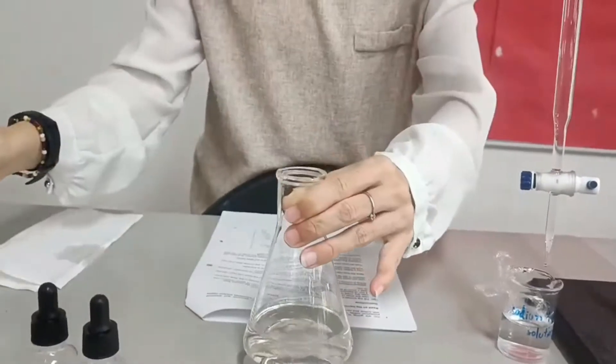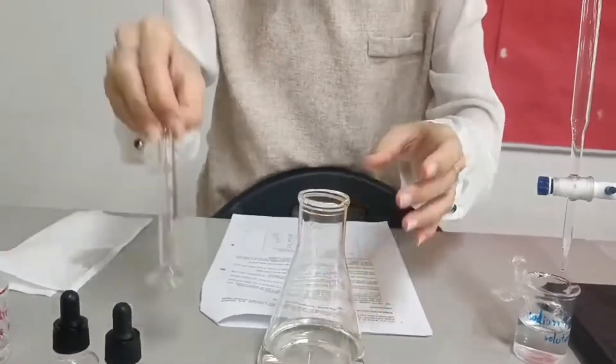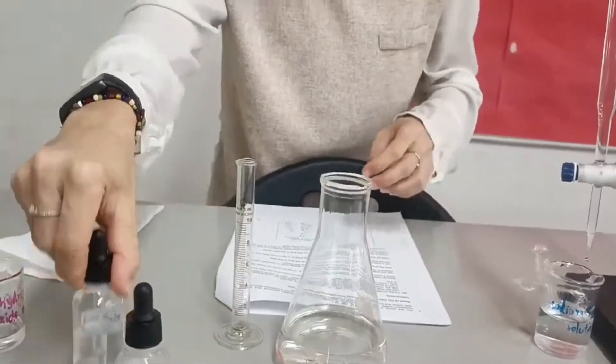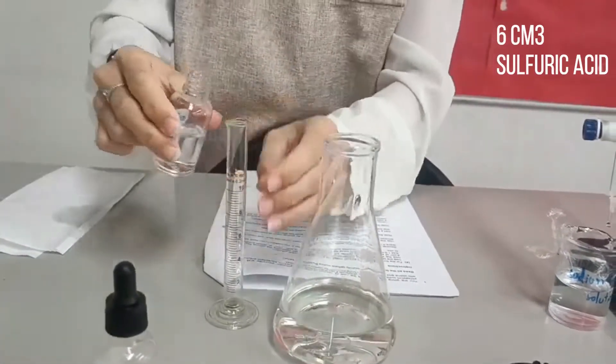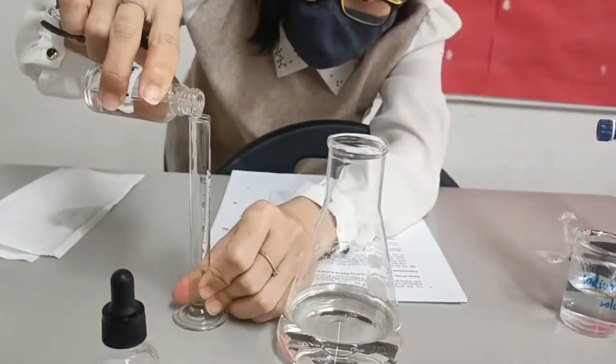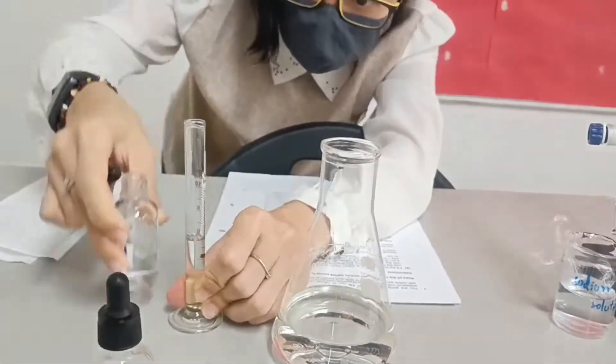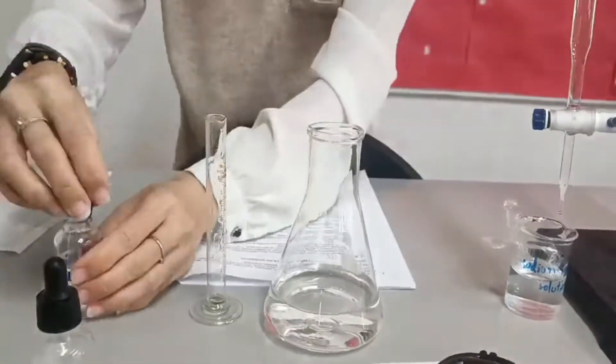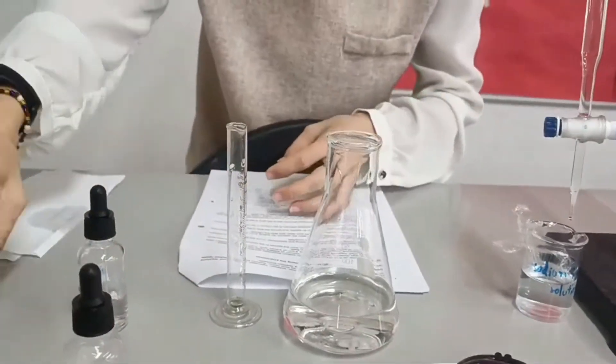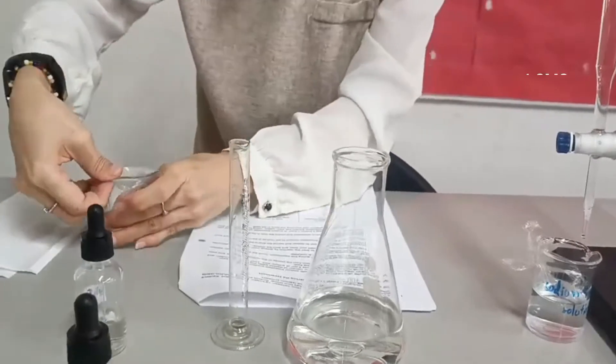And then use the small measuring cylinder to measure 6 ml of sulfuric acid. Also, starch solution, 1 ml.